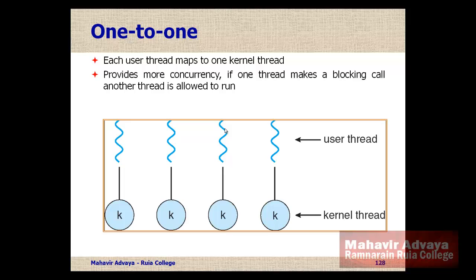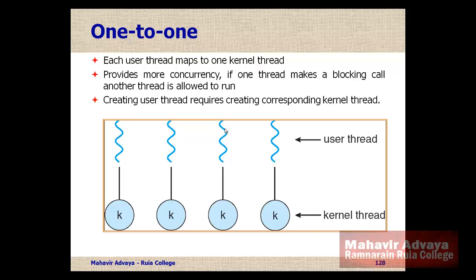Even if one thread makes a blocking call, another thread runs the application with the remaining kernel threads. However, this model increases overhead on the operating system for creating the corresponding kernel threads. If a process has many user threads, the OS has to create that many kernel threads, which burdens the operating system — managing these kernel threads becomes an overhead.